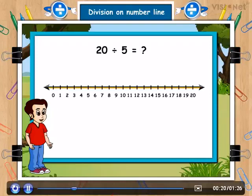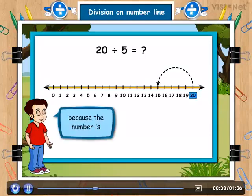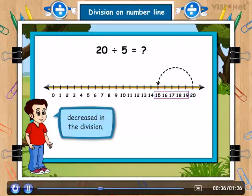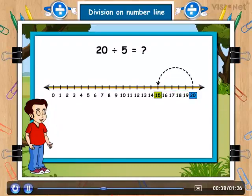So we have to make such groups of numbers where each group should have 5 numbers. So jump 5 numbers from 20 towards the left of it like this. We have jumped to left because the number is decreased in the division. Look, we have reached at 15.